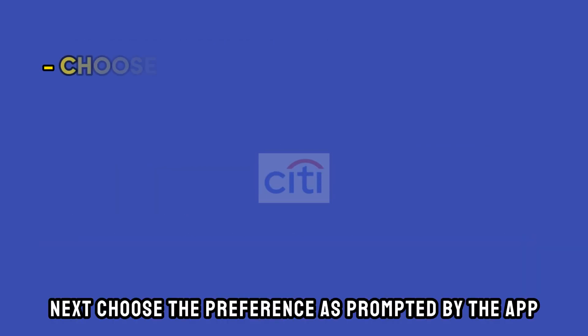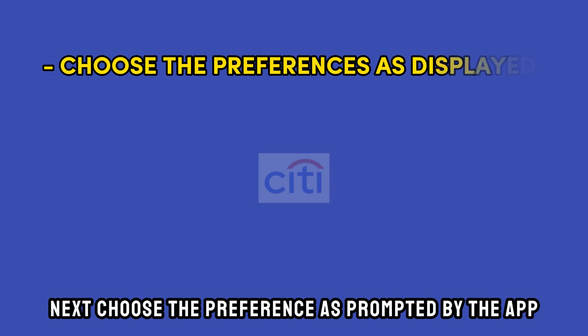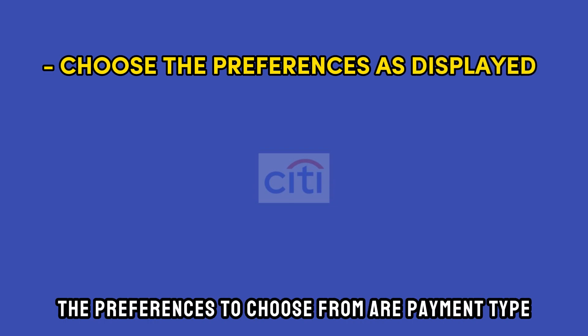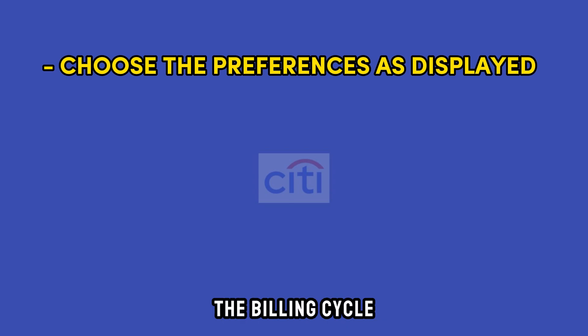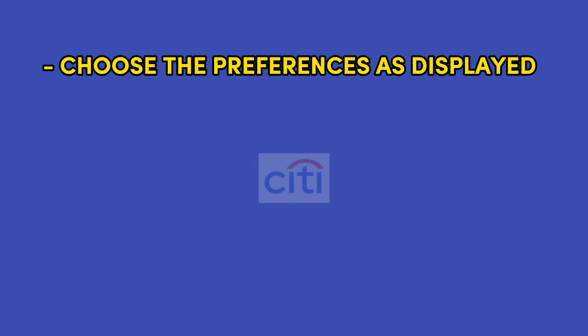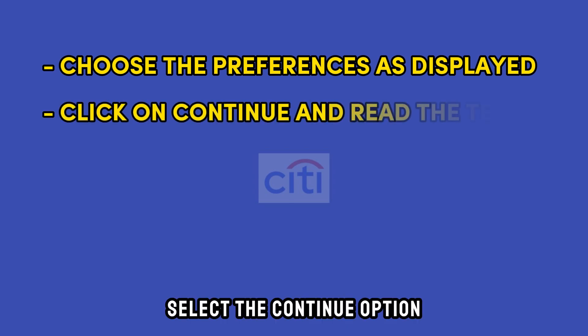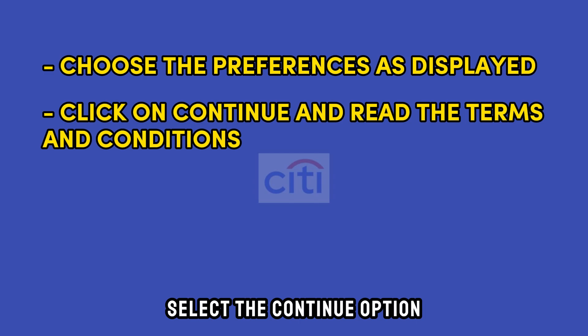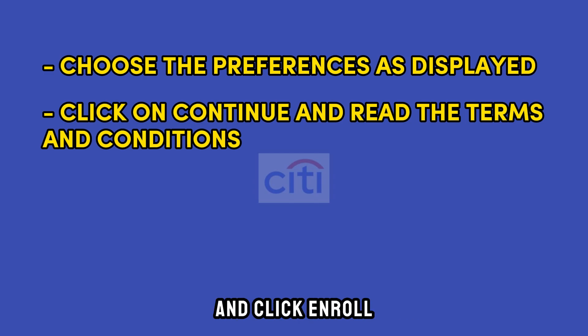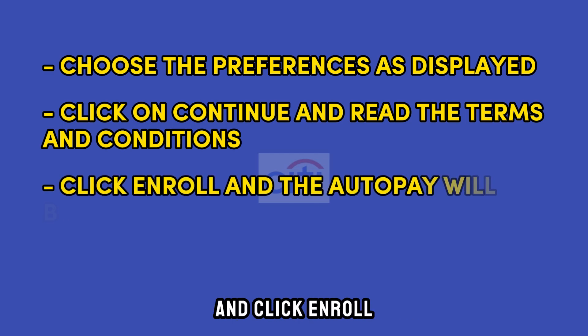Choose the preference as prompted by the app. The preferences to choose from are payment type, the billing cycle, and the payment dates. Select the Continue option, read the terms and conditions, and click Enroll.